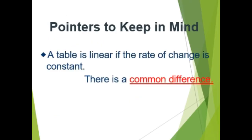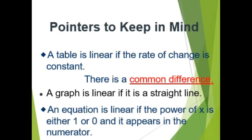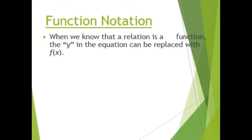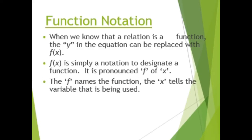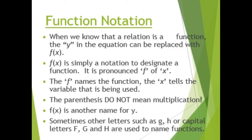Pointers to keep in mind: a table is linear if the rate of change is constant or there is a common difference. A graph is linear if it is a straight line. An equation is linear if the power of x is either 1 or 0, and it appears in the numerator. For function notation, when a relation is a function, y can be replaced with f of x. f of x is pronounced 'f of x' — the f names the function, the x tells the variable being used. The parentheses do not mean multiplication. f of x is another name for y. Other letters such as g, h, or capital F, G, and H are also used to name functions.